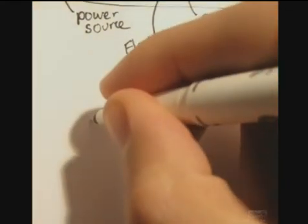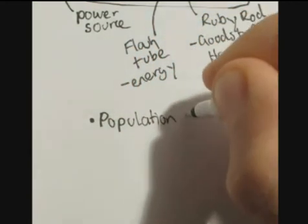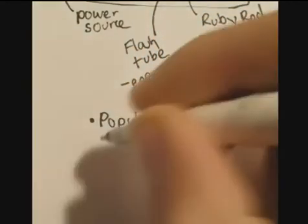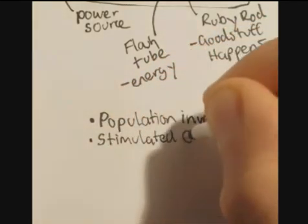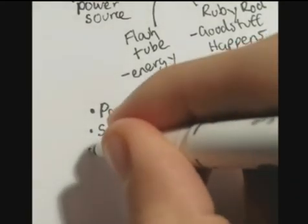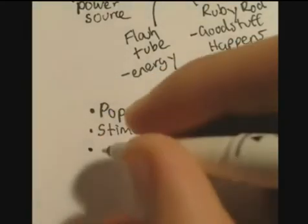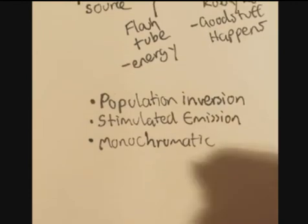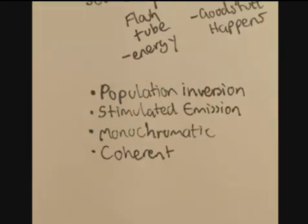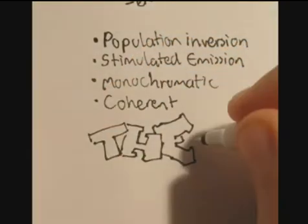So let's recap. So we have population inversion. And this is where there's many electrons in an excited state, which creates stimulated emission. This is where it creates a cascade of events, releasing more photons. Electrons going back to a lower energy state, releasing more photons. And then we have monochromatic. Mono is one. Chromatic is color. So it's one color. Same, it's basically same frequency. And coherent is coherent light.